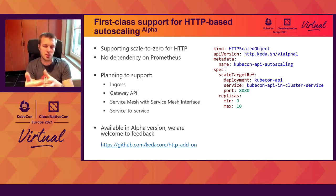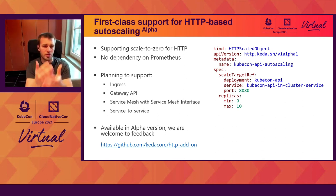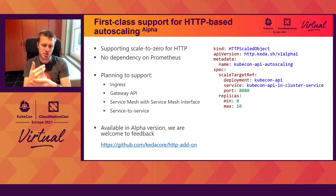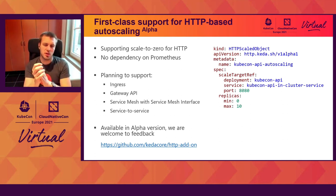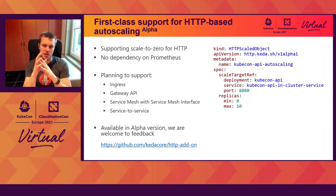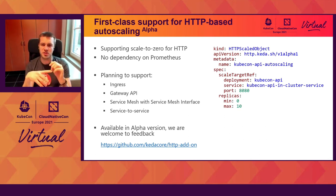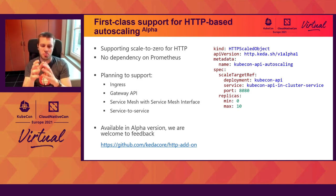So we want you to choose. If you have Prometheus already, you can use KEDA today with the Prometheus scaler. Or if you don't have Prometheus but still want to scale HTTP, you can deploy this add-on and use the new CRD called HTTP Scaled Object, where you define what you want to scale and the amount of replicas. We support today Ingress, but we're also planning to support Gateway API, service meshes by relying on the service mesh interface, and service-to-service communication. Please go and give it a try and share your feedback.